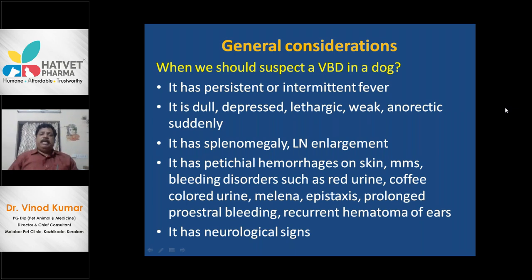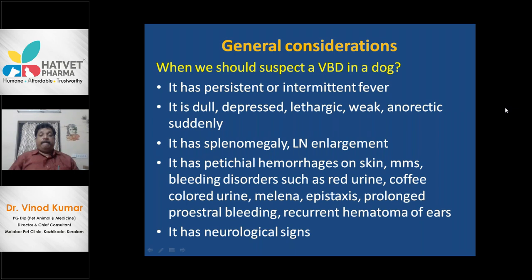There could also be epistaxis. Quite naturally when there is thrombocytopenia in a VBD there will be epistaxis. A very common clinical sign I have seen is when people telephone me or bring the patient: they say their bitch is having a prolonged bleeding time in estrus period - a prolonged bleeding time in the estrus period. Nowadays in such a condition you should suspect that it is having a VBD. Whenever there is a prolonged pro-estrus in a bitch, you should suspect a VBD.